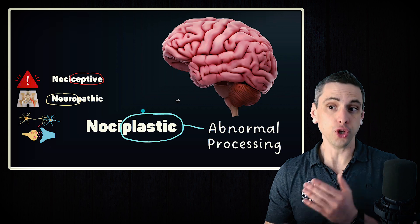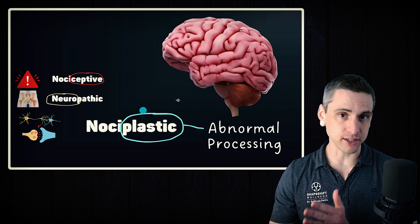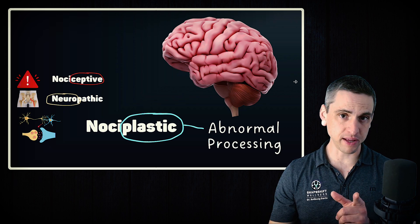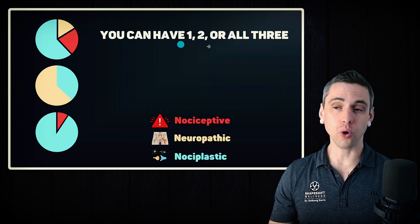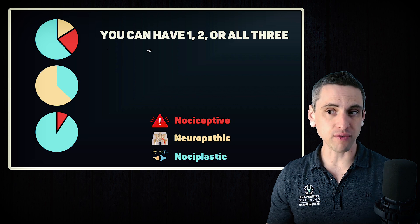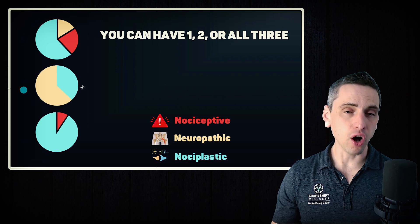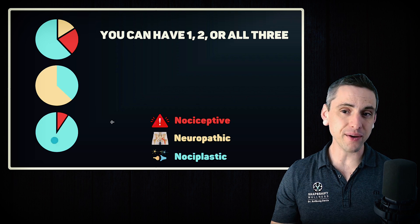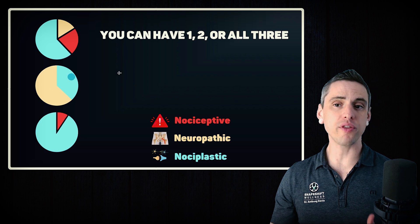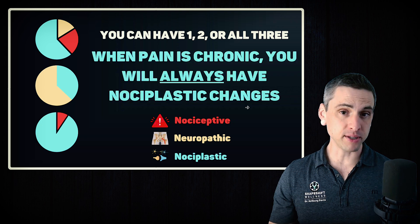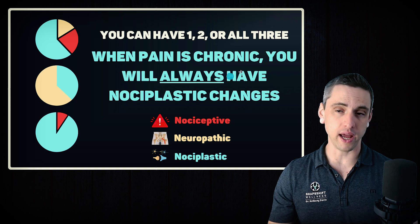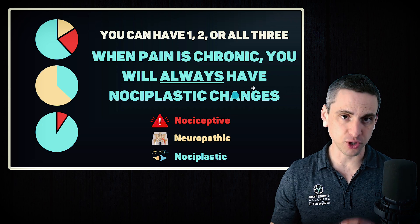First, if you have chronic pain, you have nociplastic changes. Second, that does not mean that pain is just in your brain — I'll explain this shortly. It's important to know that you could have one, two, or all three types of pain and that this is changing over time. Everybody's mix of these causes is going to be a little bit different. Some people are going to be very nociplastic with a little nociceptive; some people have true neuropathic pain with some nociplastic changes.